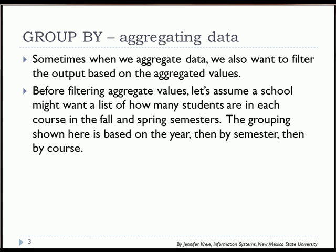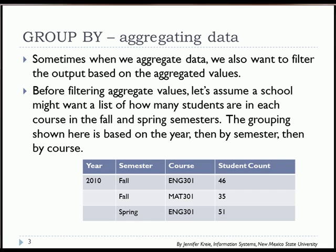Before filtering aggregate values, let's assume we have a school that wants to list how many students are in each course in the fall and spring semesters. The grouping would be based on the year, then by the semester, and then by the course. We see our example output of the year 2010, the fall and spring semester. We have English and math courses in the fall semester and English repeating in the spring semester, and we have our student count.